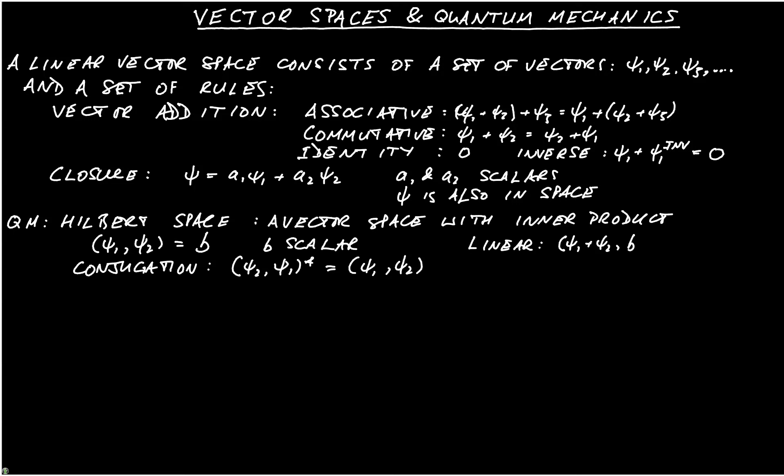Psi1 inner product with Psi2 plus A Psi3 is equal to Psi1 Psi2 plus Psi1 Psi3. And you also have to have linearity with respect to scalars. So we would say that A Psi1 comma Psi2 is equal to A times Psi1 Psi2.